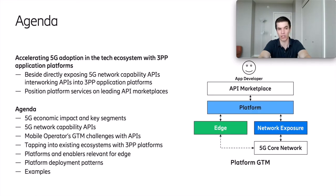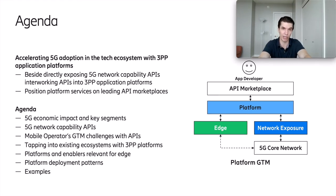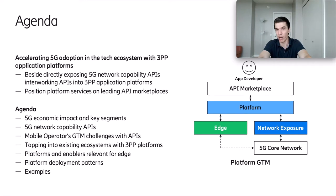In today's presentation, we will discuss how mobile operators can accelerate 5G adoption in the technology ecosystems with third-party application platforms. The key thesis is that besides directly exposing 5G network capability APIs to developers, we should consider interworking these APIs into third-party application platforms and then positioning these higher value and higher abstraction services on the leading API marketplaces.